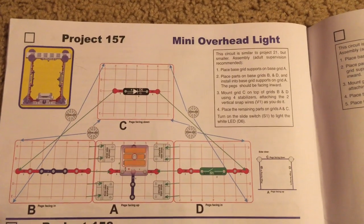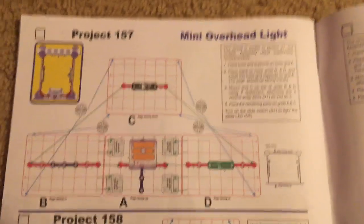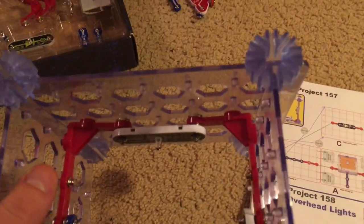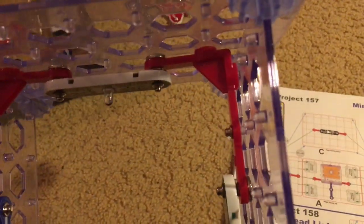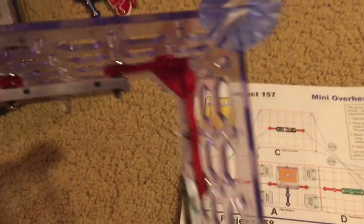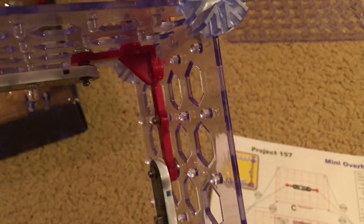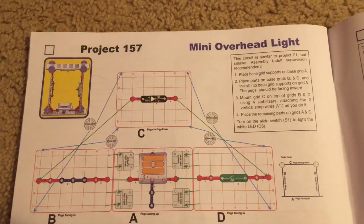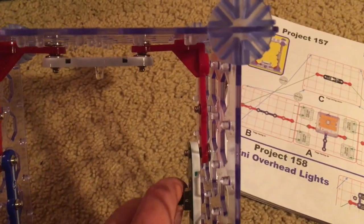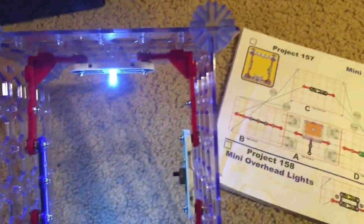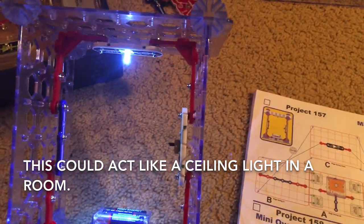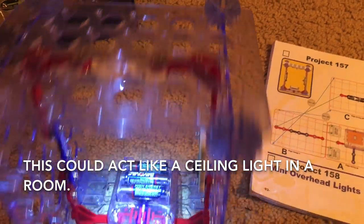Project 157, mini overhead light. The principle of this project is very simple and you'll see that the white LED is mounted in an inverted position. Note that all the pegs of the base grids face inward. I will turn on the slide switch and the white LED will come on. You have a simple white overhead light. You could pretend that this is a ceiling light in a room in your house.